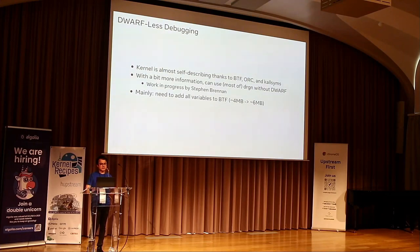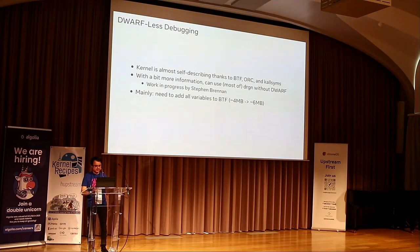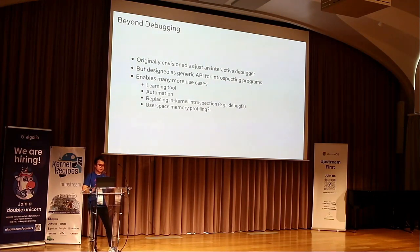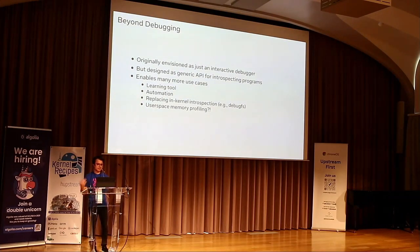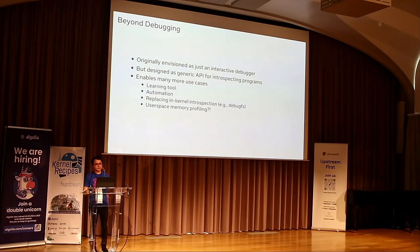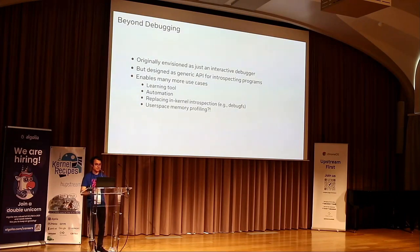I originally envisioned Drgn as just an interactive debugger, but designing it from the ground up as a library made it much more generic. This lets you use it for lots of other things — memory profiling by inspecting type information, or introspecting the kernel instead of exposing things to debugfs. Rather than the kernel managing and maintaining debugfs entries, you can write a Drgn program to replace a bunch of stuff you would have exposed read-only through debugfs. Drgn doesn't do anything on the write side yet, but there's a lot more you can do with it than just interactive debugging.